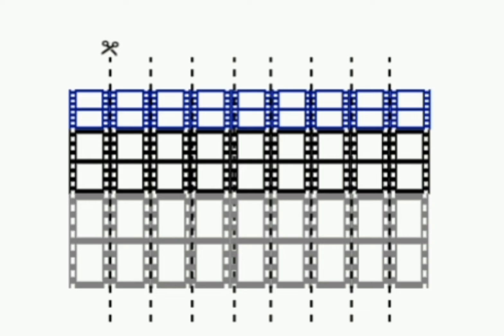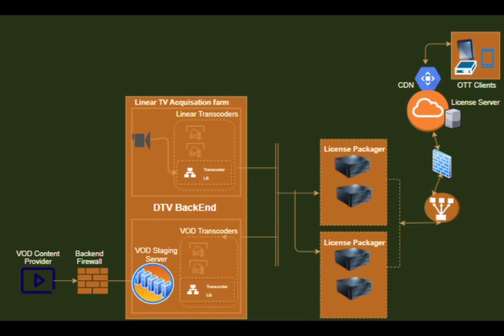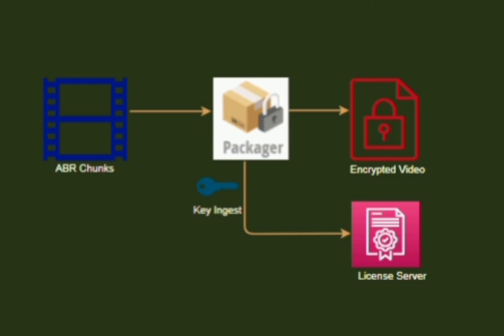You might ask: how does the player know what quality levels and segments exist? This happens through a manifest file — I will explain this part later in the end-to-end picture. I also showed a picture of a load balancer. This component balances the processing load between transcoders in the transcoding farm.